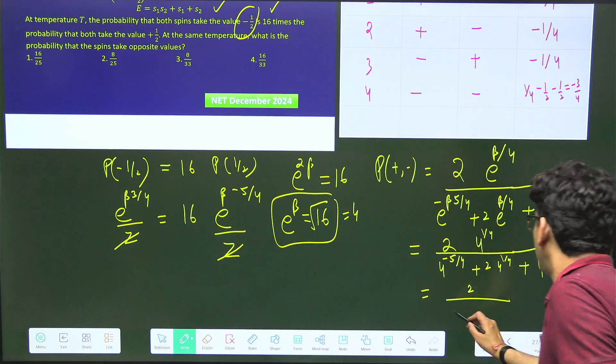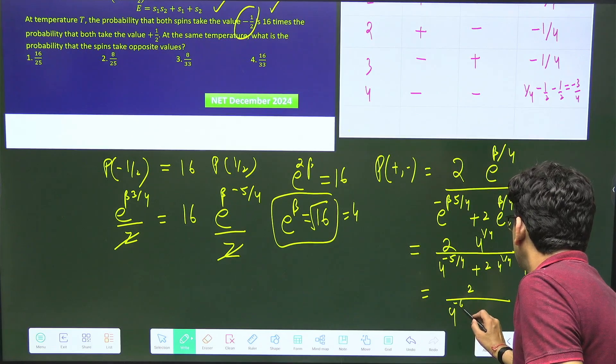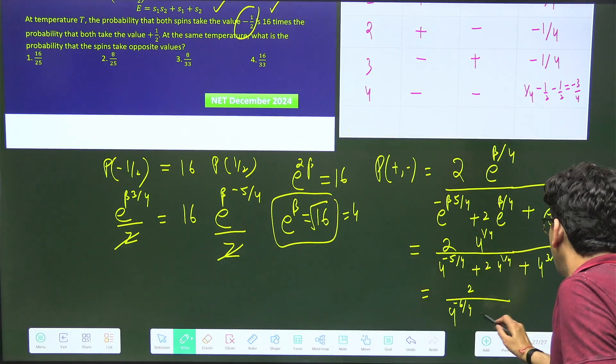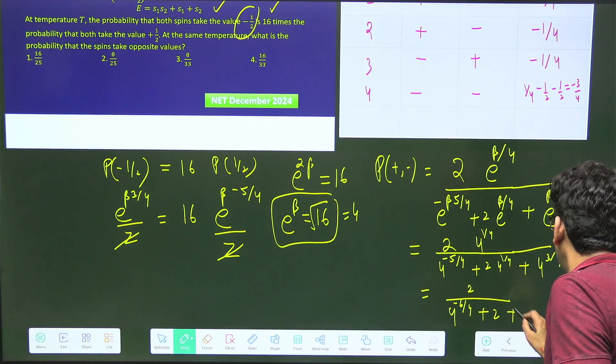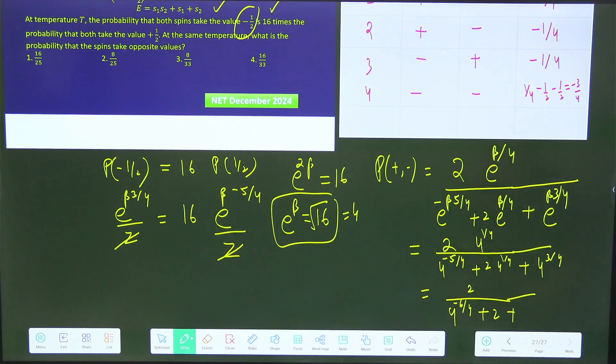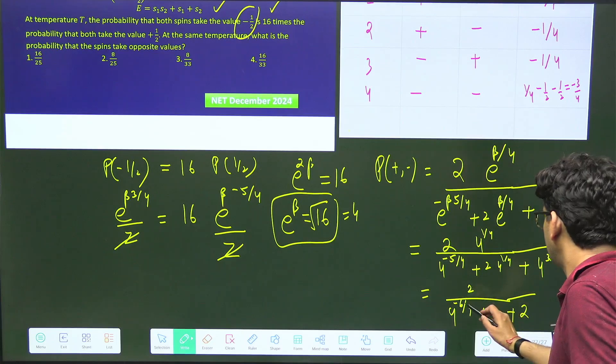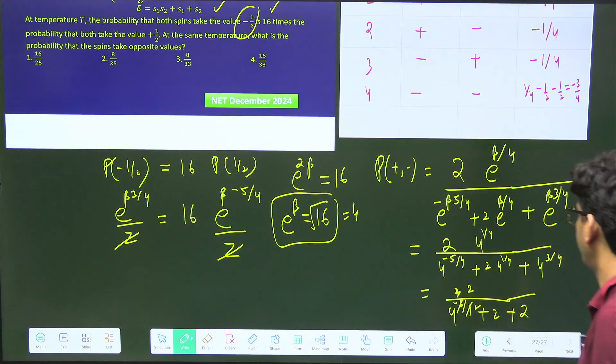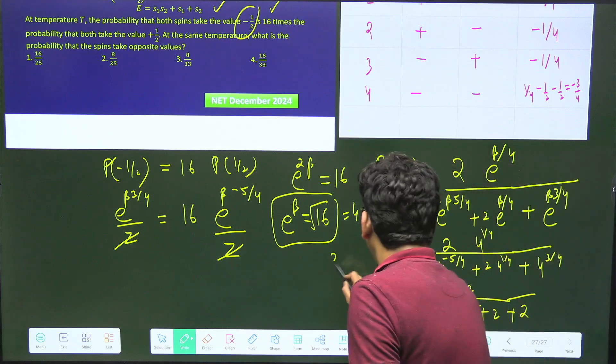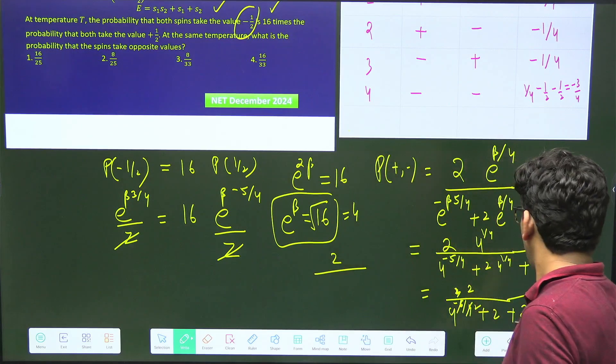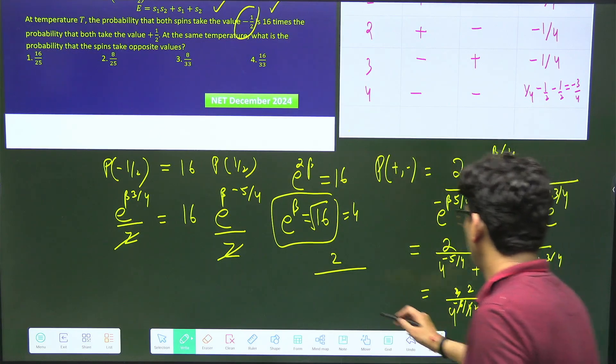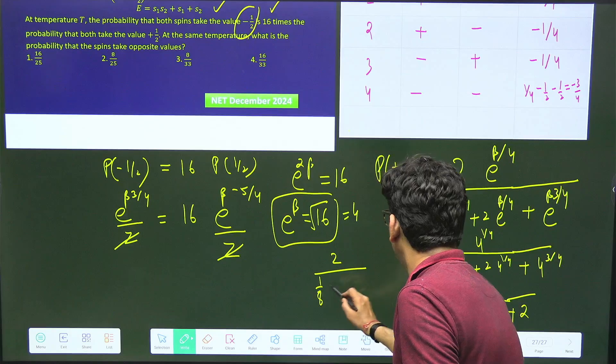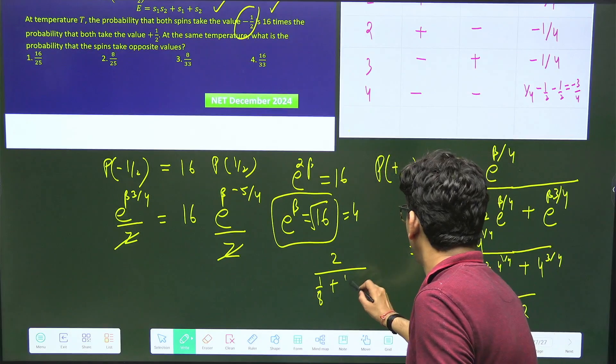What I'm going to do is divide by 4 to the power 1 by 4 from numerator and denominator. Here it will become 2 over 4 to the power minus 6 by 4, because minus 1 by 4 will come. Here it will be cancelled, and here minus 1 by 4 will give 2 by 4, so it will be 4 to the power half, which is again 2.